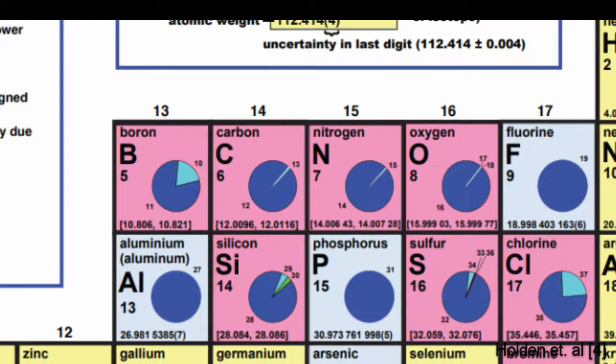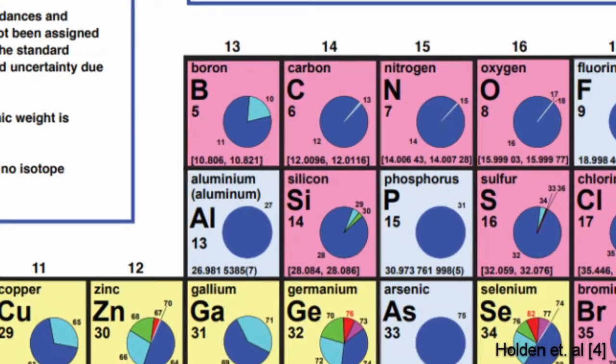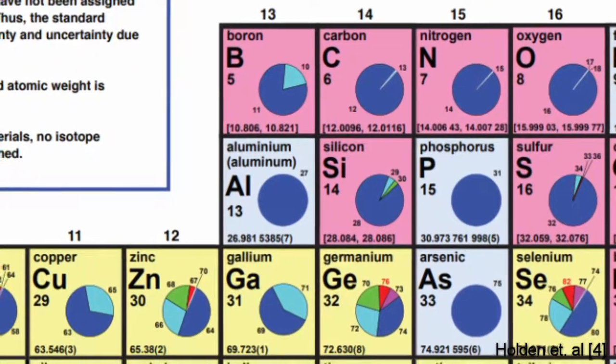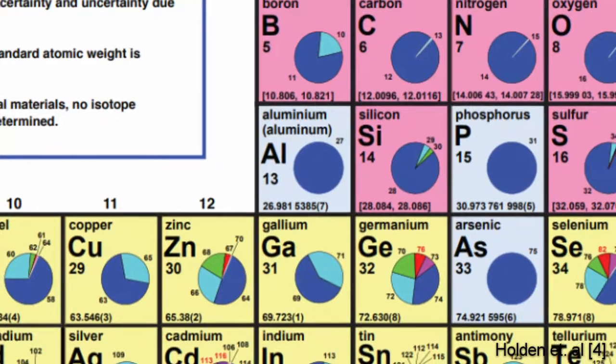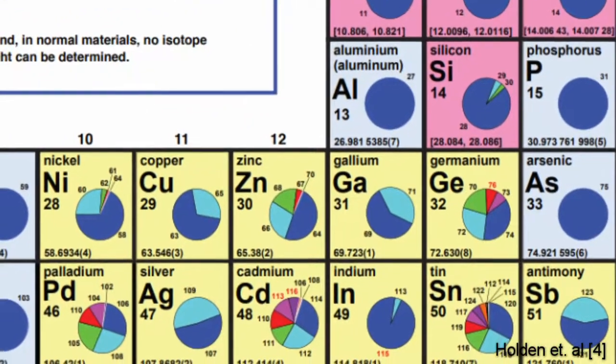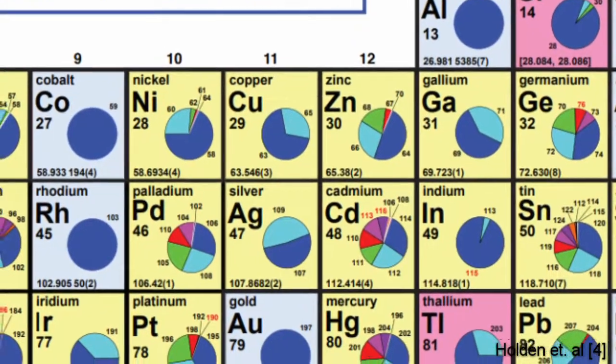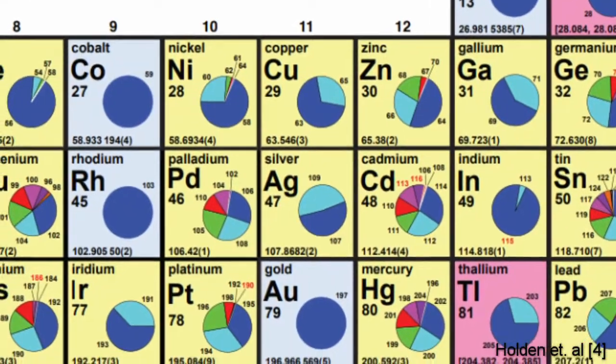These variations in isotopic abundances of stable isotopes in normal materials give rise to variations in standard atomic weights of the elements. Because of variations in physical and chemical properties of the isotopes of an element, isotopic abundances and atomic weights of that element will vary in normal materials.